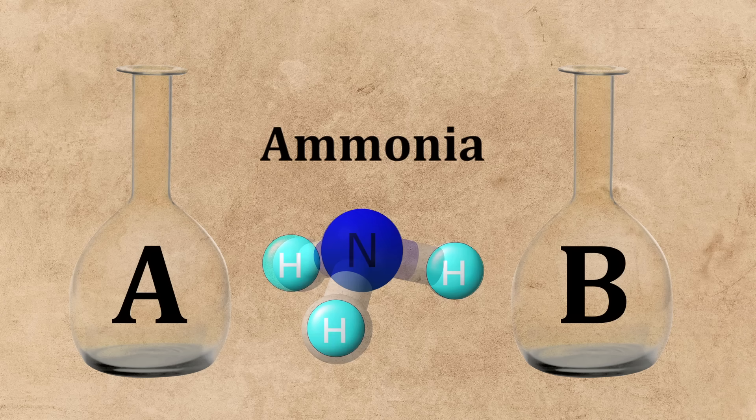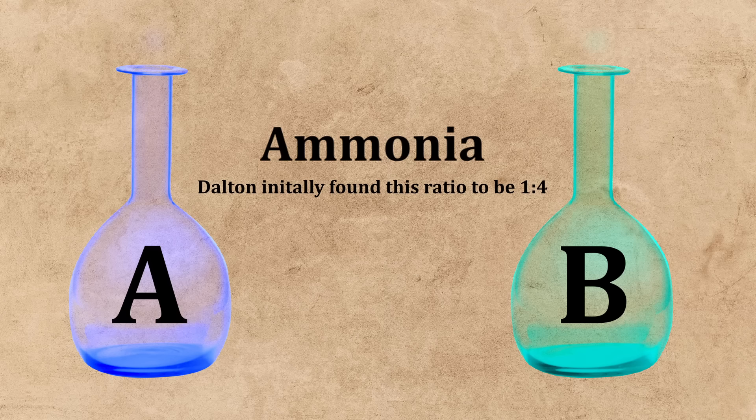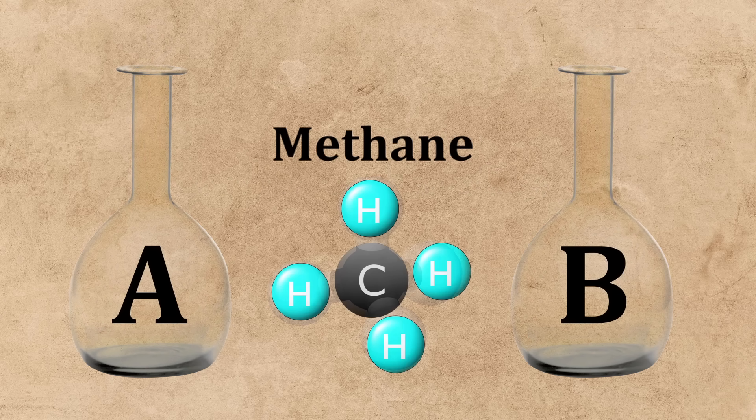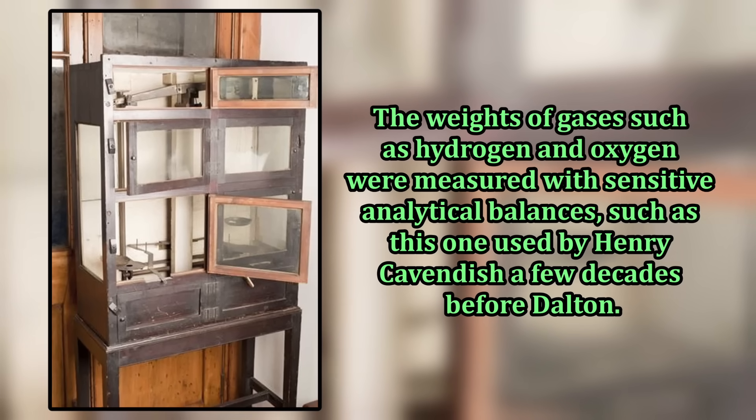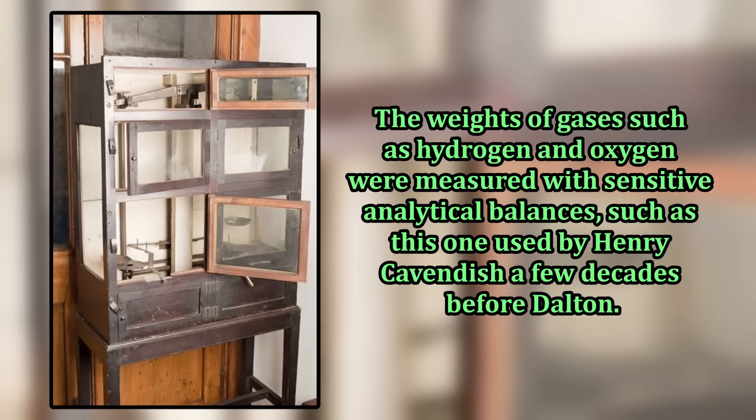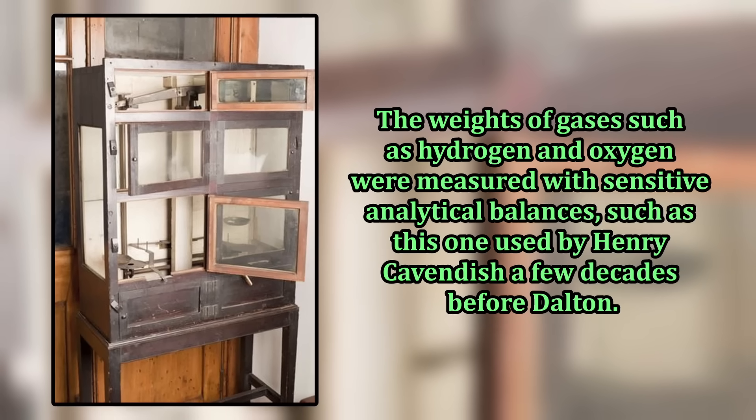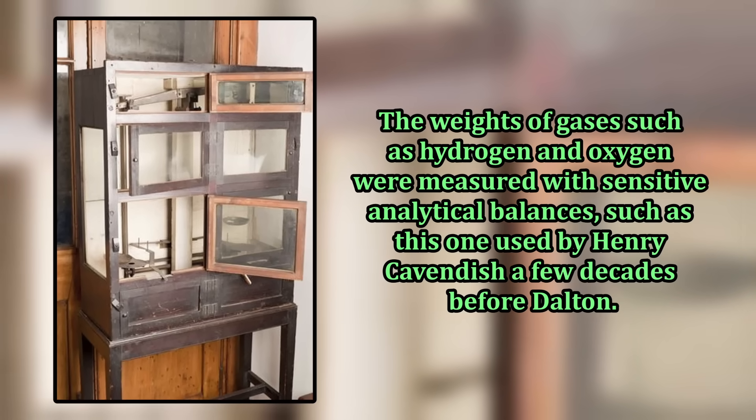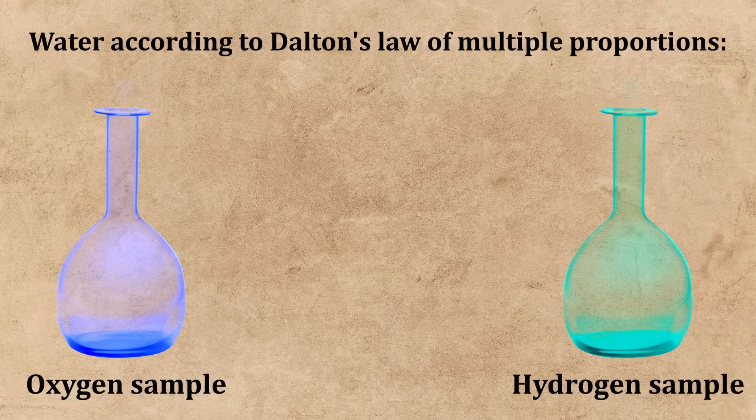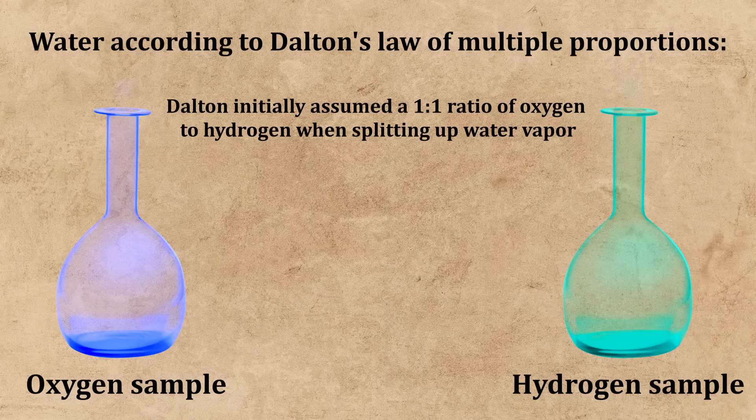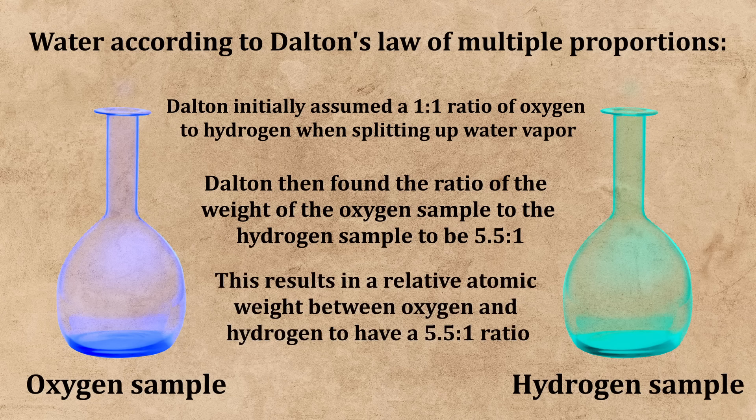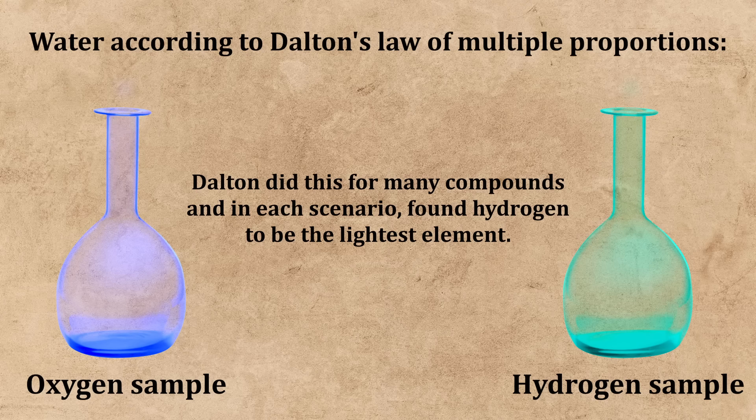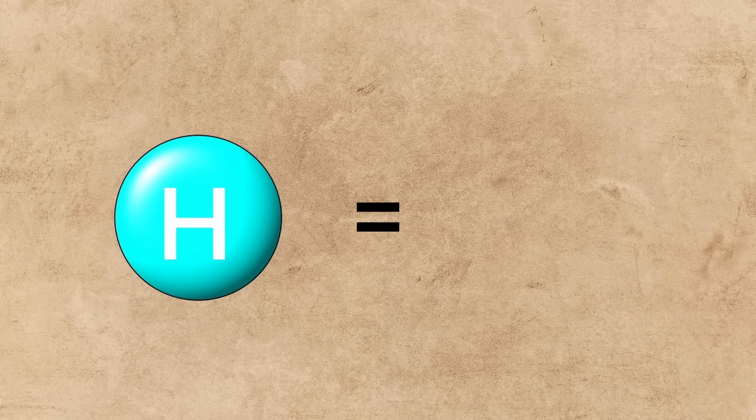Dalton discovered this law by analyzing common compounds, such as water and ammonia, and studying how they split up into their components. He also took the analysis from these compounds and used it to create a primitive version of relative atomic weights of a select few elements, including hydrogen, carbon, and oxygen. He labeled hydrogen as the lightest element of them all, for out of every molecule he analyzed, hydrogen always existed in greater amount compared to the other element it had bonded with once the molecule was split into its components.